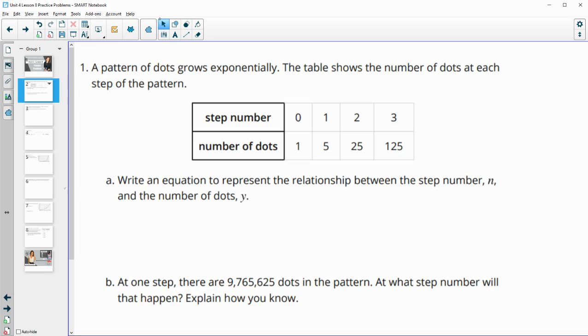Number one says that we have a pattern of dots that grows exponentially. The table shows the number of dots and the step of the pattern. So write an equation to represent the relationship between the step number and the number of dots y.